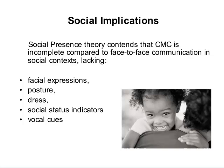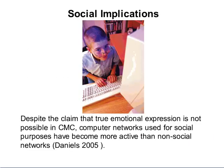There are several thoughts on the social implications of computer-mediated communication. For example, the social presence theory contends that CMC is incomplete compared to face-to-face communication and social contacts, lacking specific things such as facial expressions, posture, dress, social status indicators, and vocal cues. Despite the claim that true emotional expression is not possible in CMC, computer networks used for social purposes have become more active than non-social networks.